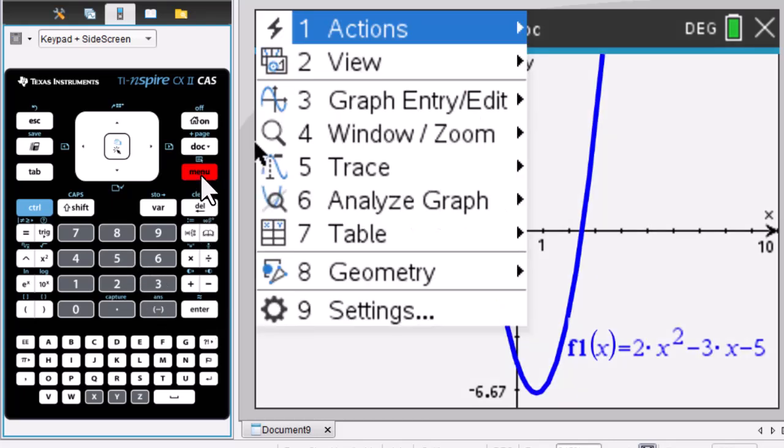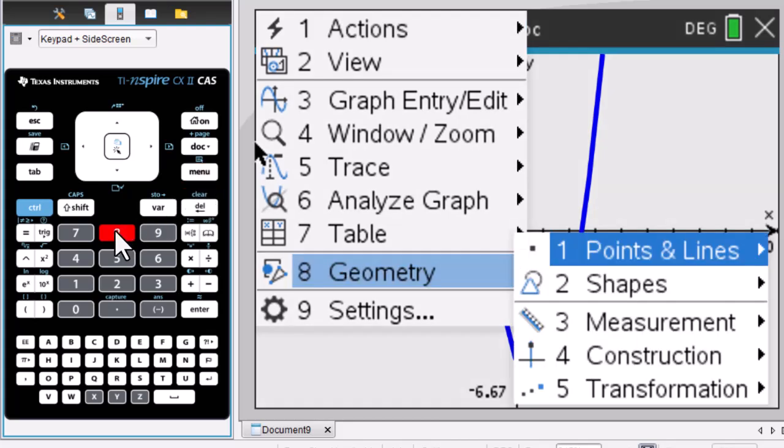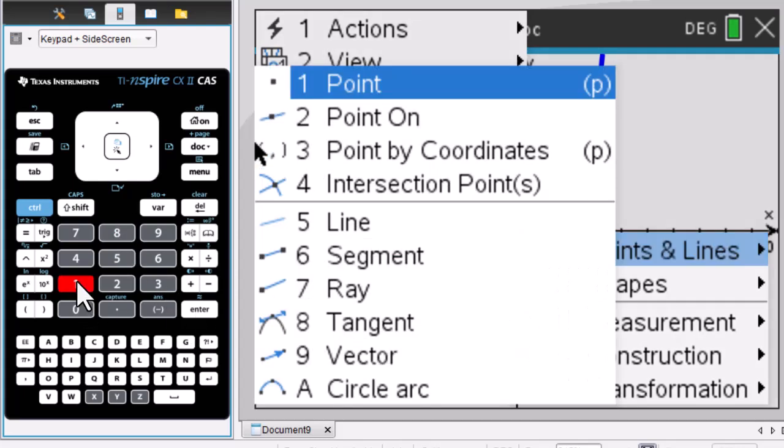Go to menu 8, Geometry, Points and Lines, 1, 2, Point ON.